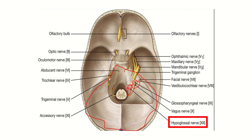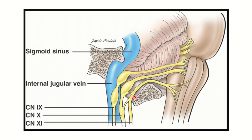On the other hand, we can see the hypoglossal foramen, or hypoglossal canal, through which the hypoglossal nerve passes. In the second picture, we can see the jugular foramen, through which the internal jugular vein passes, and the inferior petrosal sinus also opens here. Cranial nerves 9, 10, and 11 — the glossopharyngeal, vagus, and accessory nerves — pass through the jugular foramen.